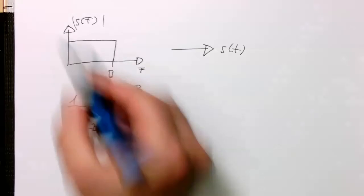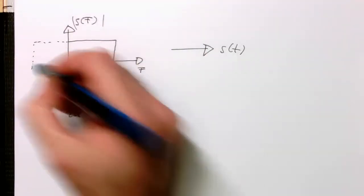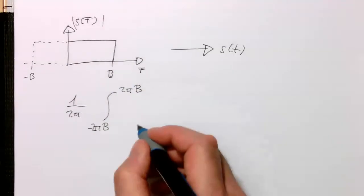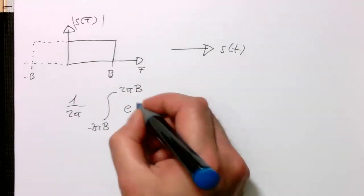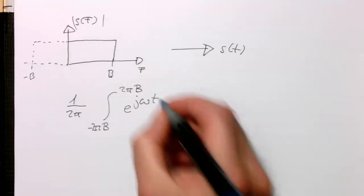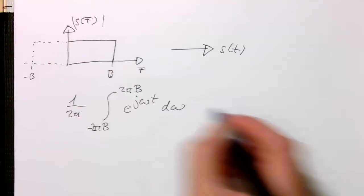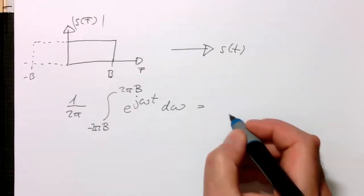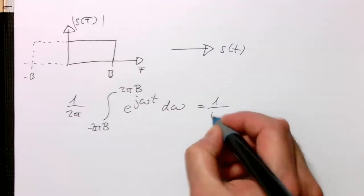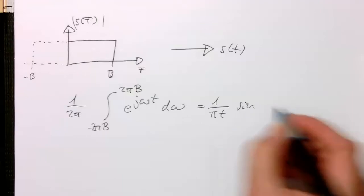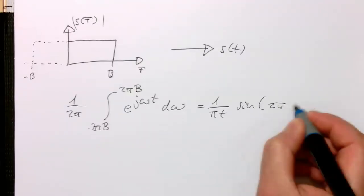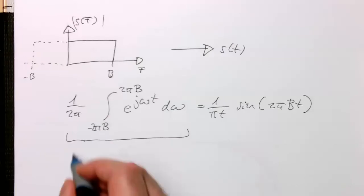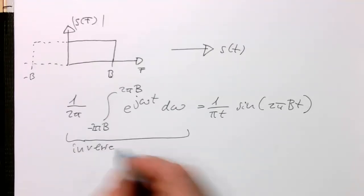So we are integrating from minus 2 pi B to 2 pi B. So the bandwidth of this, because we also need to take into account the negative frequencies here. So it goes to minus B. And so we are integrating this and doing an inverse Fourier transform. And so we use the angular term here and putting the 2 pi in here. And so the inverse Fourier transform gives us then 1 over pi T and then sine of 2 pi B T. So that's here the inverse Fourier transform.